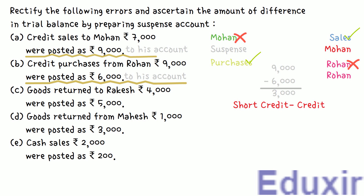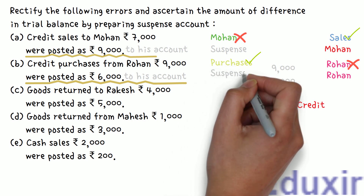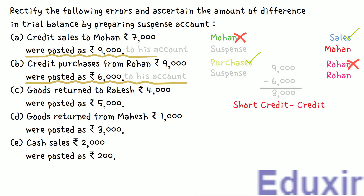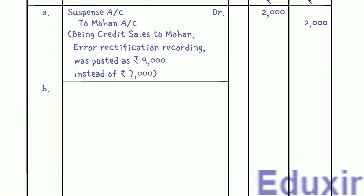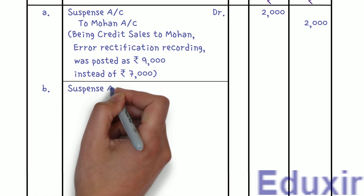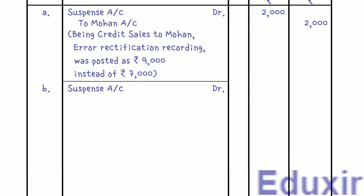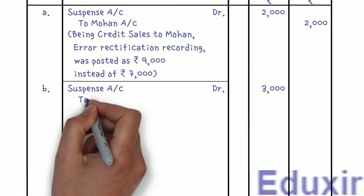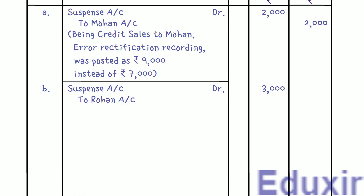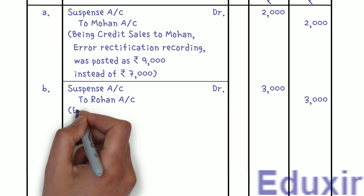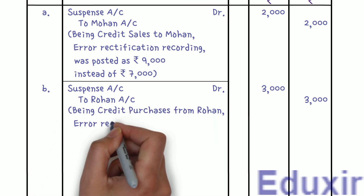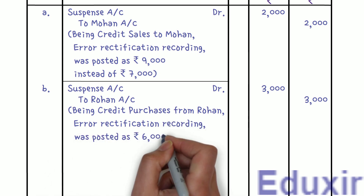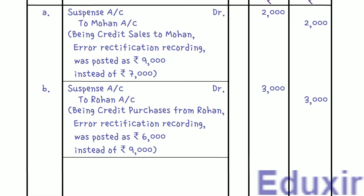Since there is a short credit, we post the rectification entry on the same side — the credit side. So we credit Rohan's account with 3,000 rupees. As this is a one-sided error, the suspense account is debited. Journal entry: Suspense Account Dr. 3,000 rupees; To Rohan's Account 3,000 rupees. Narration: Being credit purchases from Rohan — error rectification recording.